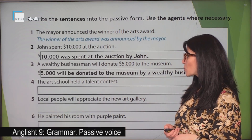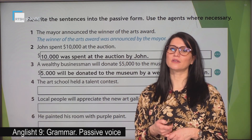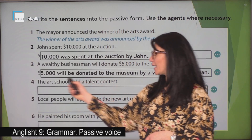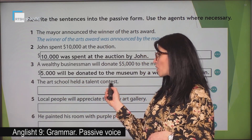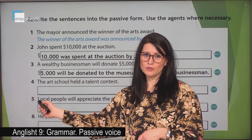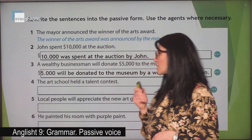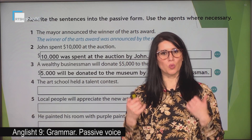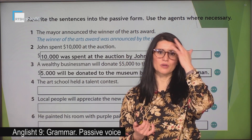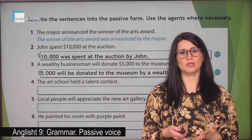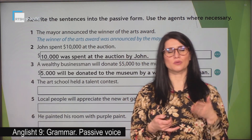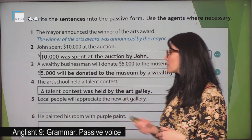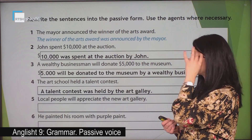The art school held a talent contest. This is the object and this is the subject — we want the object to become the subject of the passive sentence. Have a look at the verb 'held' — it is in the past. Which auxiliary verb and tense are we going to use? We are going to use 'to be' in the past. A talent contest was held by the art school.